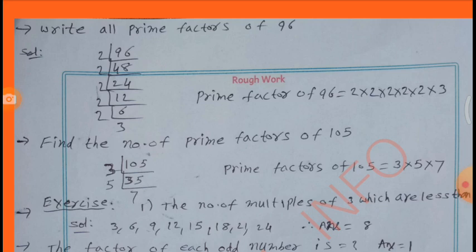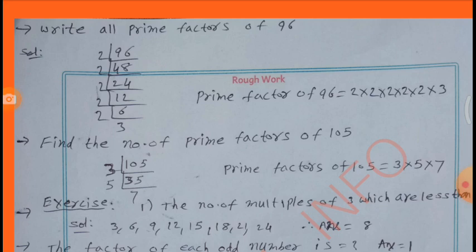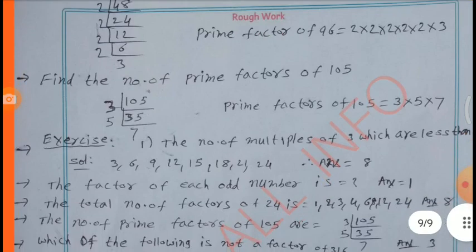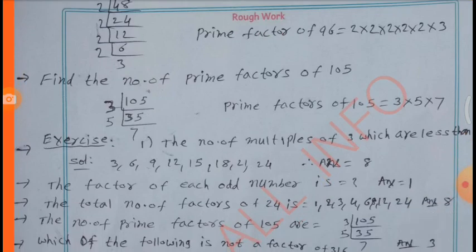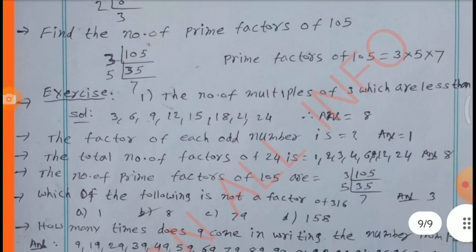Therefore, prime factors of 96 are 2 × 2 × 2 × 2 × 2 × 2 × 3. Find the number of prime factors of 105. Prime factors of 105 are 3 × 5 × 7.